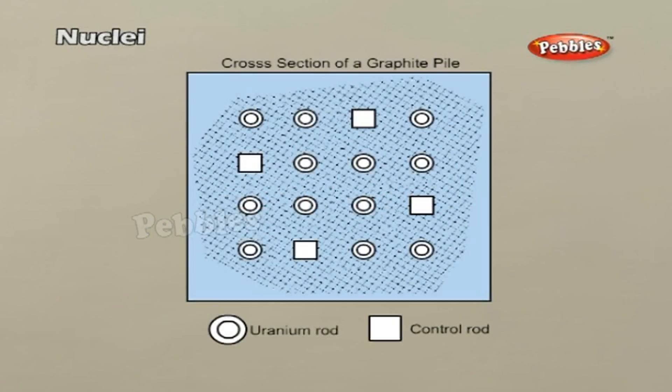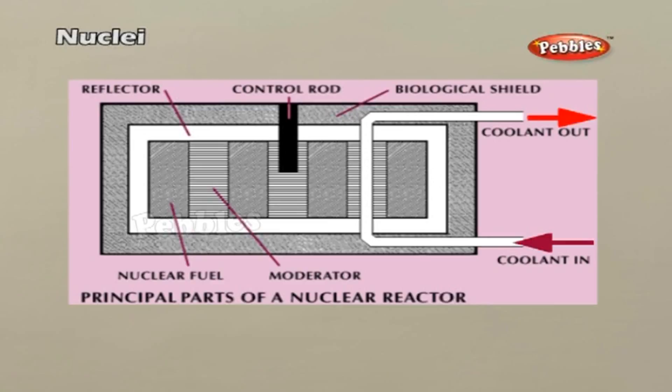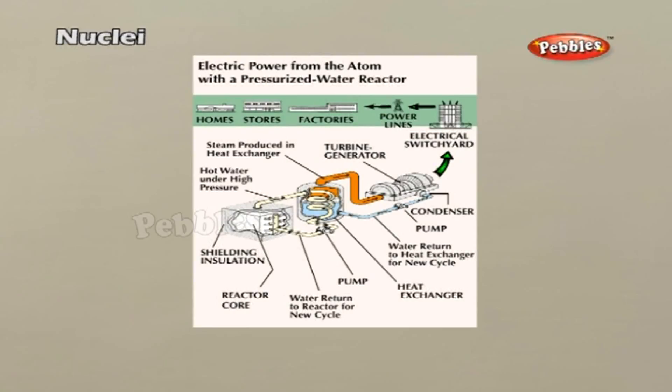Control rods. These rods absorb the neutrons and stop the chain reaction to proceed further. Cadmium or boron rods are generally used for this purpose. When the control rods are completely inserted in the graphite blocks, they absorb neutrons to such an extent that the chain reaction comes to a grinding halt.